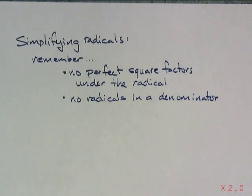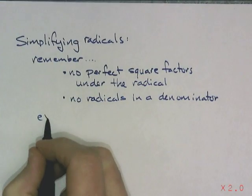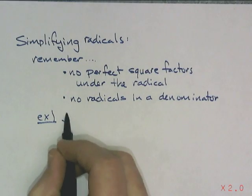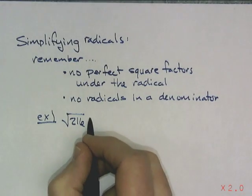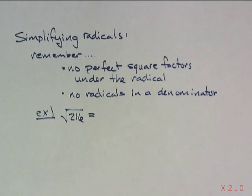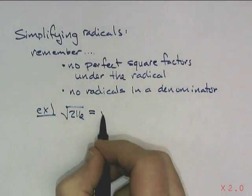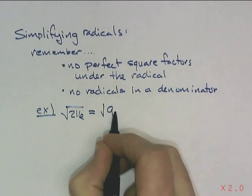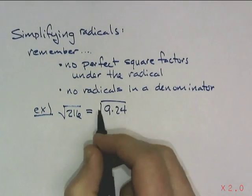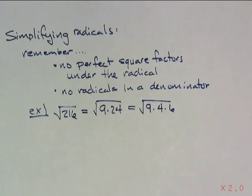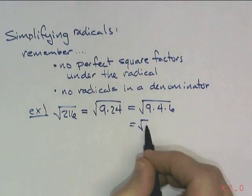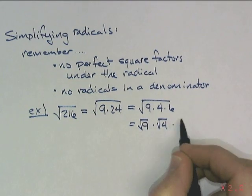We'll refresh on how to take care of that. If we have a radical of a number that we're not sure how to simplify, we need to break it down into its components. One way is to break it down by seeing which perfect squares go into that. For example, that's the same thing as 9 times 4 times 6, which is the same thing as the square root of 9 times the square root of 4 times the square root of 6.